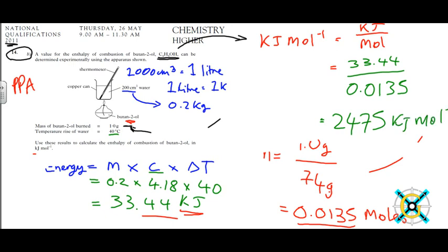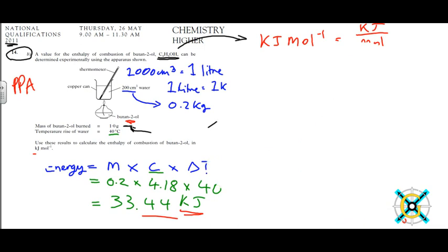Okay, but we need to remember that anything that's being burnt is exothermic, so exo means it's giving out heat, so it's going to be a minus. We need to remember there's a minus sign in there, so the final answer is minus 2475 kilojoules per mole.